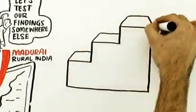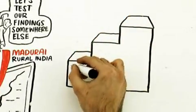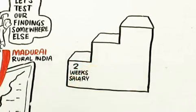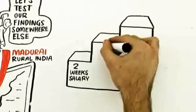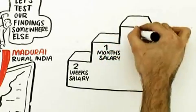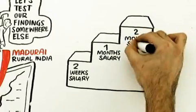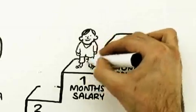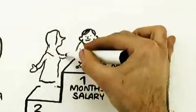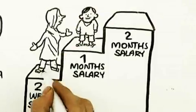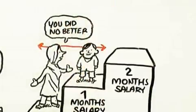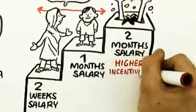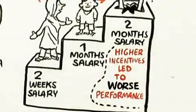Small rewards, the equivalent of two weeks salary. Medium performance, about a month salary. High performance, about two months salary. So those are real good incentives. You're going to get a different result here. Well, what happened though was that the people offered the medium reward did no better than the people offered the small reward, but this time around, the people offered the top reward, they did worst of all. Higher incentives led to worse performance.